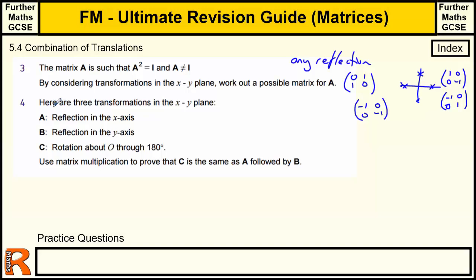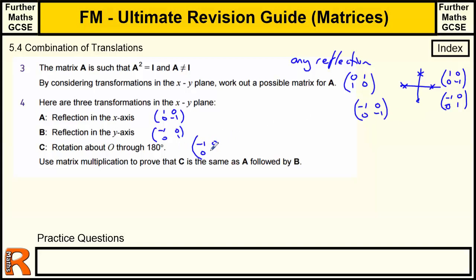Question four: three transformations in the x-y plane — A is reflection in the x-axis, B is reflection in the y-axis, C is a 180-degree rotation. Use matrix multiplication to prove that C equals A followed by B. The matrix for reflection in the x-axis is [[1,0],[0,−1]]. Reflection in the y-axis gives [[−1,0],[0,1]]. The 180-degree rotation gives [[−1,0],[0,−1]].